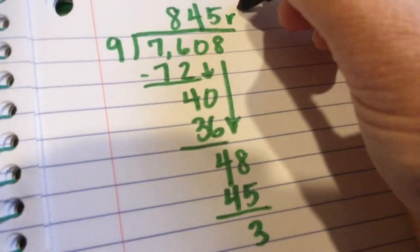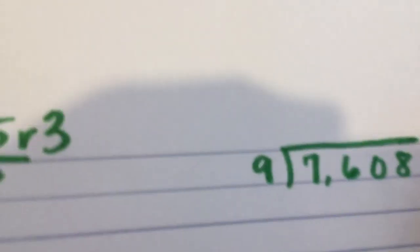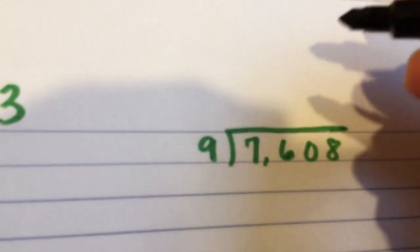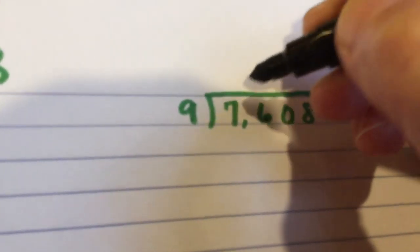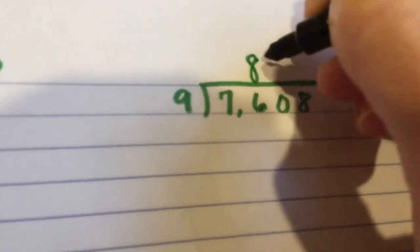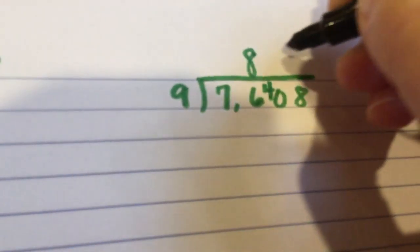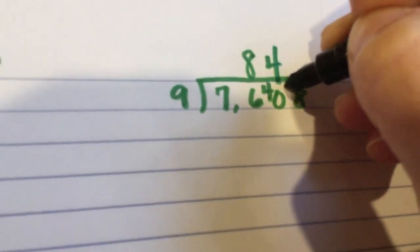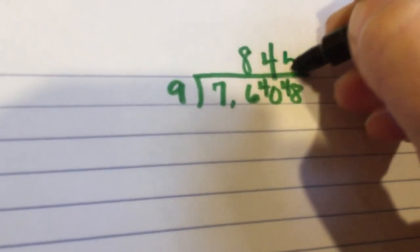My method—I don't know if it's taught anywhere, I'm sure it must be—9 into 76 goes 8 times with 4 left over. 9 into 40, 4 times with 4 left over. 9 into 48, 5 times with 3 left over.